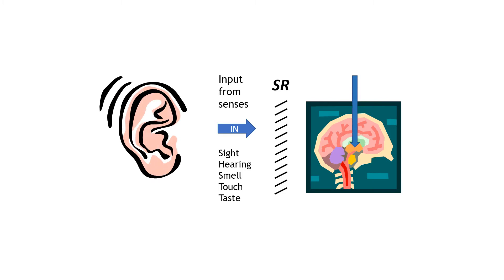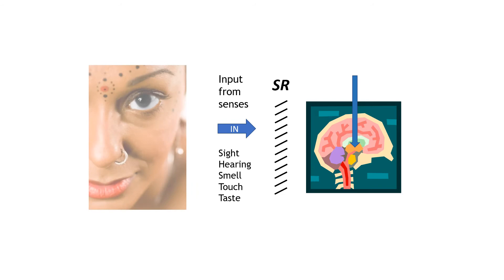Similarly, stimuli gathered by nerve endings in the ears enter the brain through the sensory register. In fact, stimuli gathered by all the senses, including touch, smell, and taste, enter the brain through the sensory register.